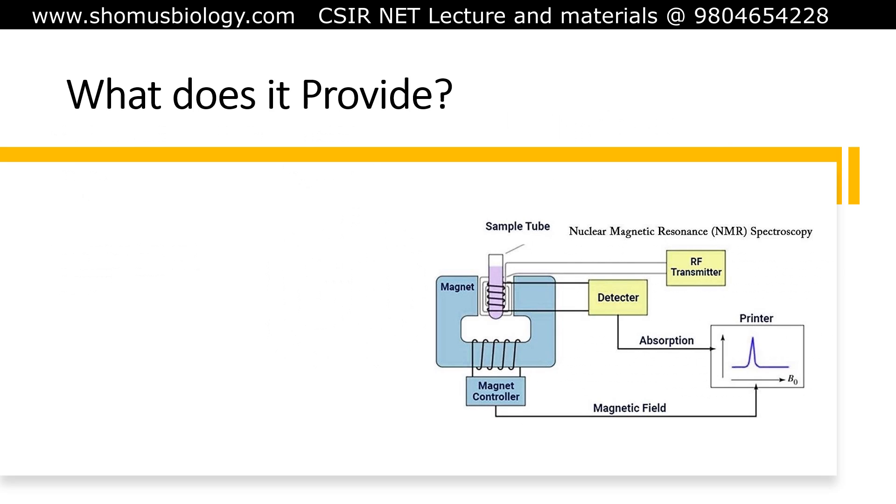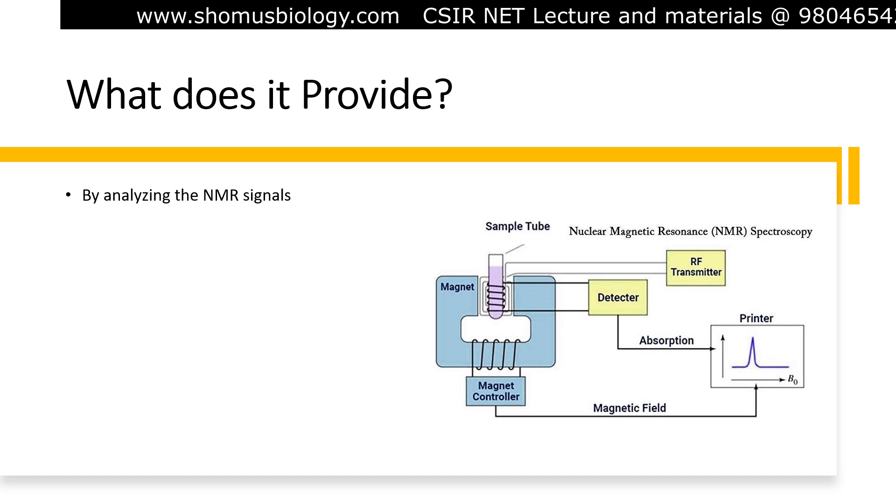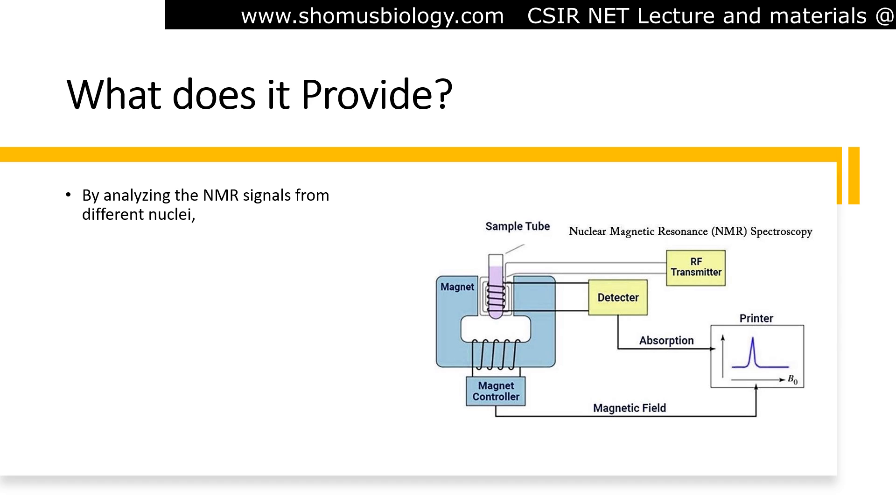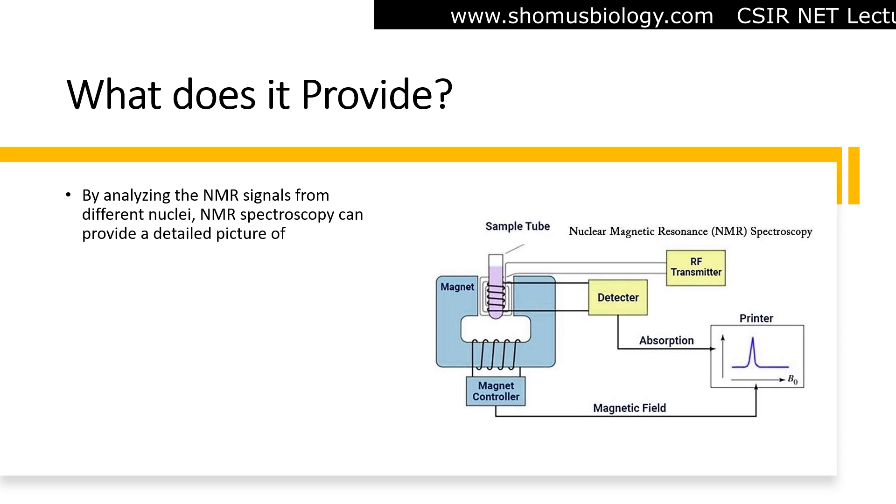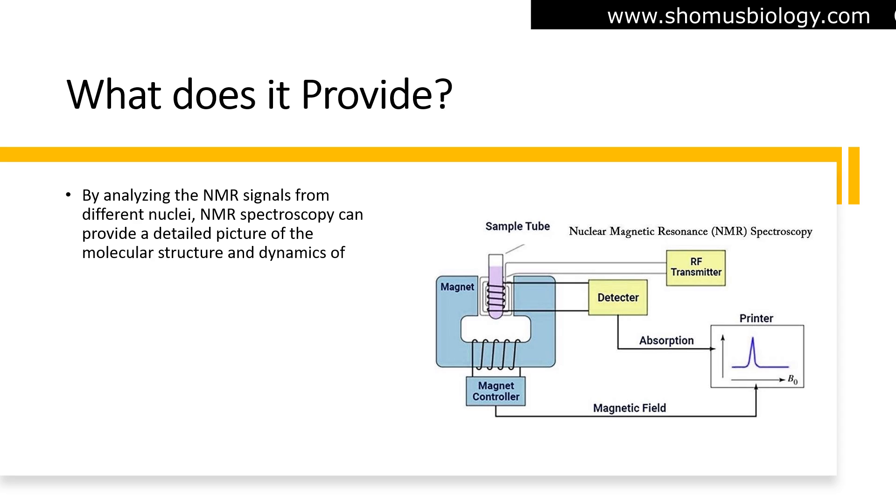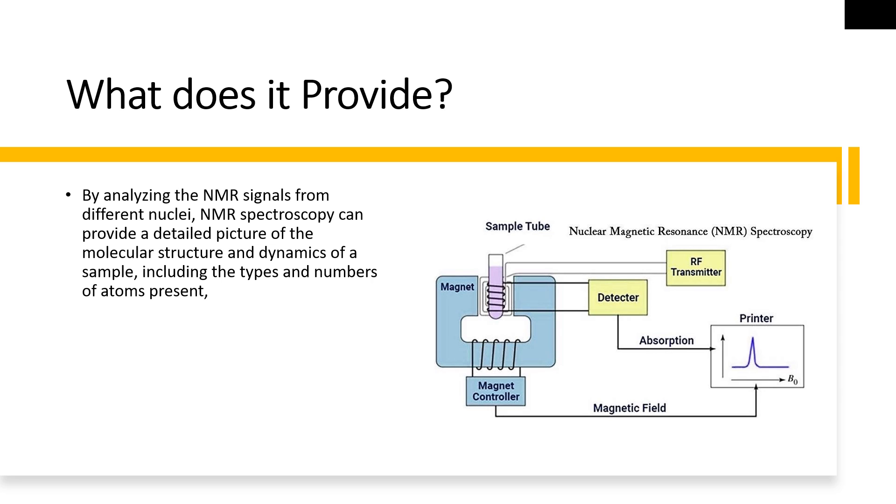By analyzing the NMR signals from different nuclei, NMR spectroscopy can provide a detailed picture of the molecular structure and dynamics of a sample, including the types and numbers of atoms present, their chemical environment, the distances between atoms, and the relative orientation of chemical bonds.